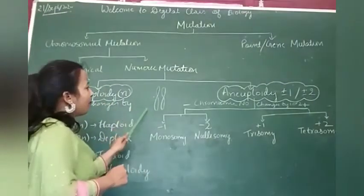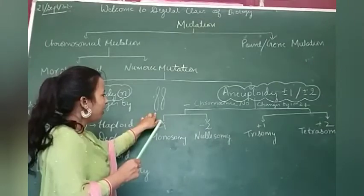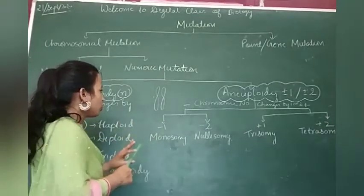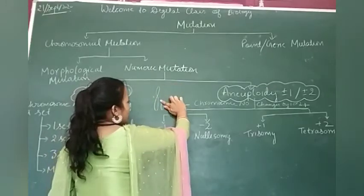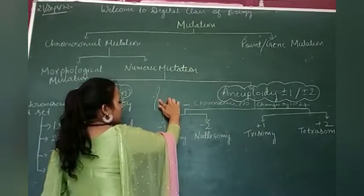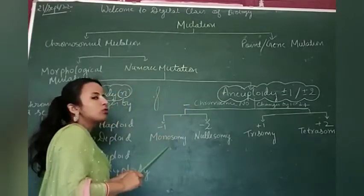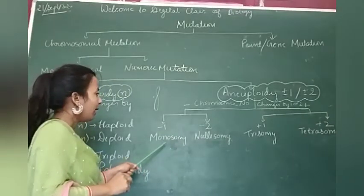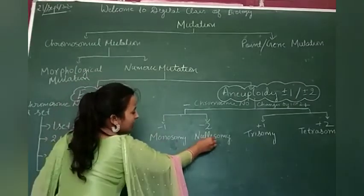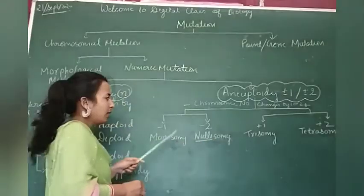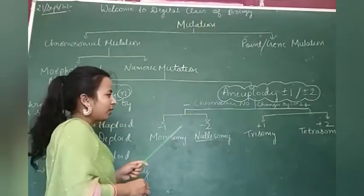If I talk about diploid organisms, we have these homologous chromosomes. If I suppose this is chromosome four. Out of these two, if one is removed, this is known as monosomy. But if both chromosomes are removed, then it is known as nullisomy. I hope you have got a clear idea.